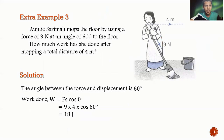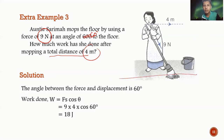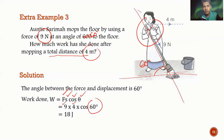Example 3: Auntie Sarimah mops the floor using a force of 9 N at an angle of 60 degrees to the floor. She mops a total distance of 4 meters. The angle between force and displacement is 60 degrees, so using W = Fs cos θ: W = 9 × 4 × cos 60° = 18 Joules.